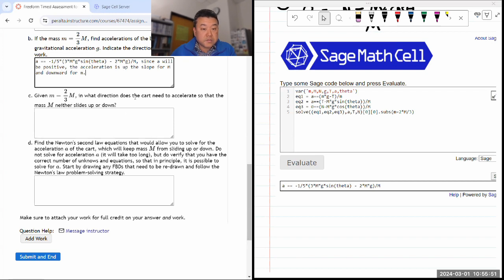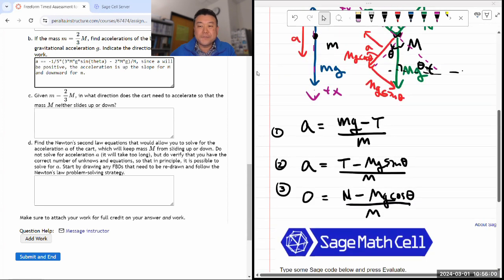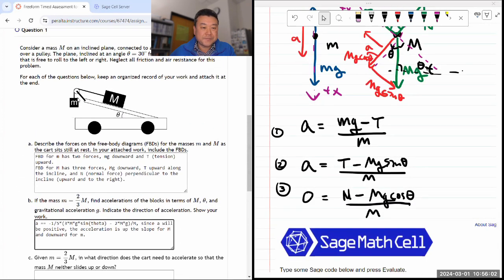So given a, in what direction does the cart need to accelerate so that the mass M neither slides up or down? That's the hard question. So let's see. You have this picture and you have figured out this is going to slide up. This is going to move down. So it's asking the question of we want to have it so that this doesn't slide.